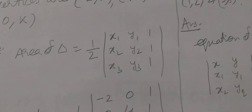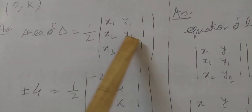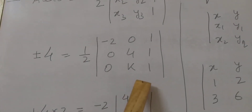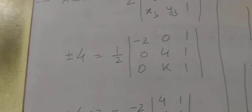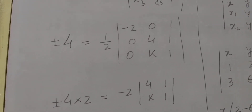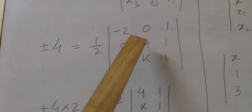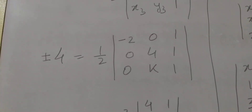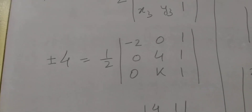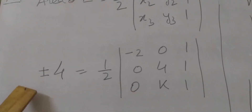Area is given as 4 square units. So: half times the determinant with x1, y1 = (-2, 0); x2, y2 = (0, 4); x3, y3 = (0, k). We have to put a plus-minus sign here because we are finding the value of k and area can never be negative. If we are finding the area of a triangle we show it positive only, but if the question asks for an unknown value of k, then we put a plus-minus sign before it.